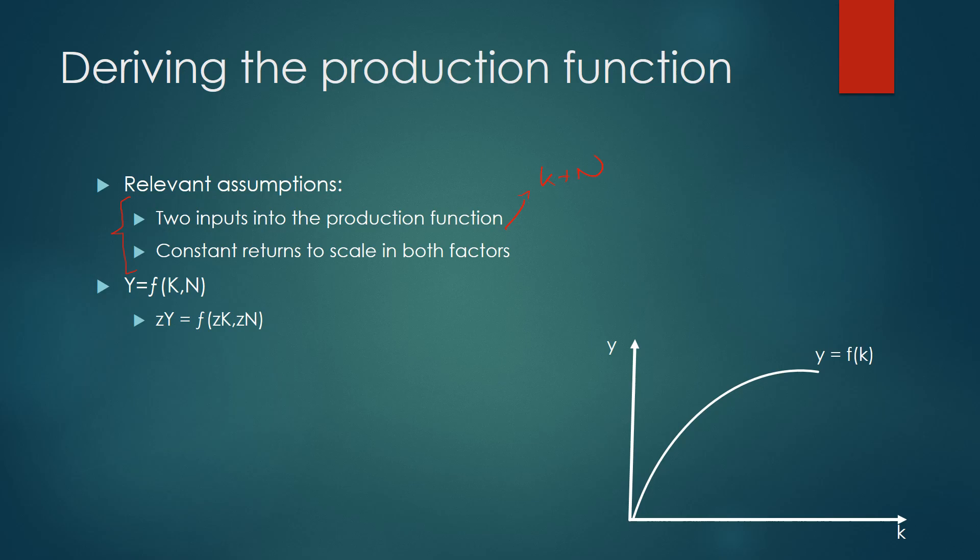So here I've written out the production function where Y output is equal to some factor of capital and labor. And then now because we have constant returns to scale outlined over here we can rewrite this as zY is equal to some factor of z multiplied by K, z multiplied by N. And all that's saying is that if you multiply Y by some number z it's going to be the same as multiplying K by z and multiplying N by z.